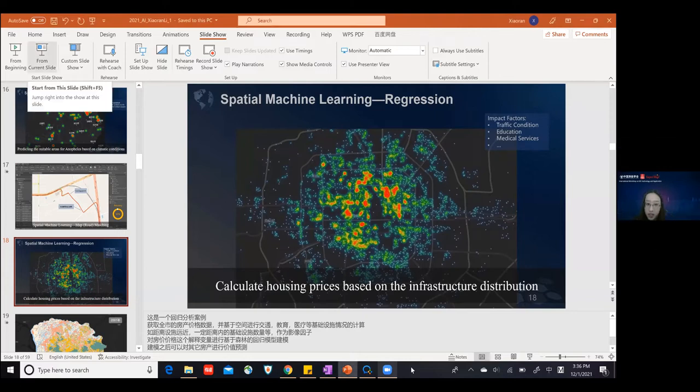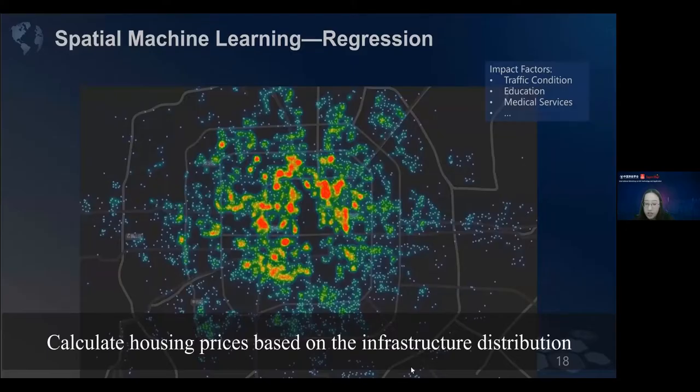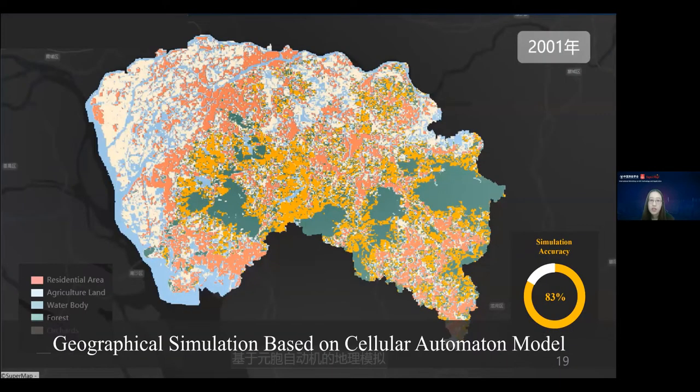The last spatial machine learning task is regression. We can calculate housing price based on infrastructure distribution, because we all know that housing price has some relationship with traffic conditions, education levels, and medical services. With the help of regression algorithms, we can also simulate land cover change. Like we can use land cover data from 2001 to 2007 to predict the land use at 2008.